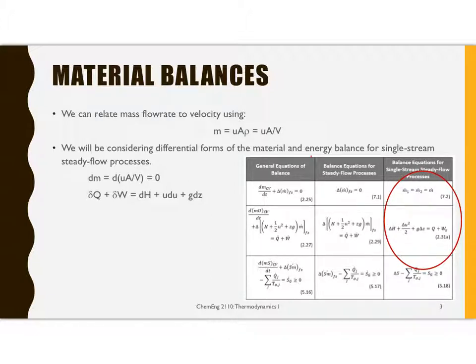The change in heat transfer plus work is DH plus the change in kinetic energy and change in potential energy, written as UDU plus GDZ. What we want to do now is look at what we can learn from using those differential forms for flow through just a duct.